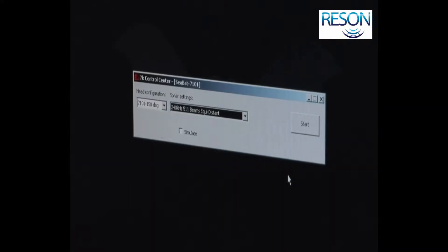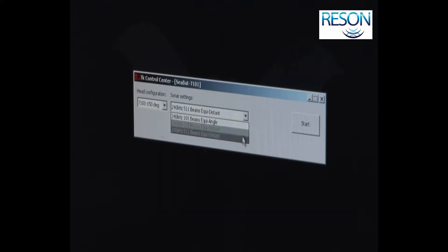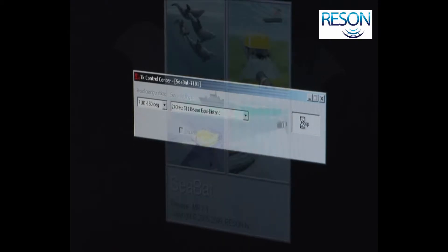We start the CBAT-70101 software by choosing the beamforming mode we want. I take 511 beams equidistant, press start, and the sonar software starts off.